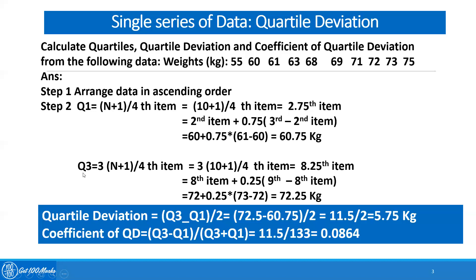Similarly, Quartile 3 equals 3×(N+1)/4th item. Just to remind you, Quartile 2 is the median, which is 2×(N+1)/4 — the 2 and 4 cancel, so normally for median we use the (N+1)/2th item. Continuing, Q3 equals 3×(10+1)/4, which is the 8.25th item. The 8th item is 72, so Q3 equals 72 plus 0.25 multiplied by (9th item minus 8th item), giving a value of 72.25 kilograms.